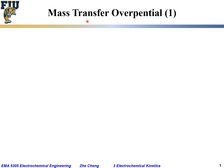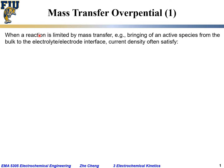We talked about concentration overpotential. Now let's give the most common example of concentration overpotential, which people call mass transfer overpotential. Mass transfer overpotential refers to the transport of mass or actual material species. We say this occurs when an electrochemical reaction is limited by mass transport — for example, bringing an active species from the bulk of the electrochemical system to the electrode-electrolyte interface.